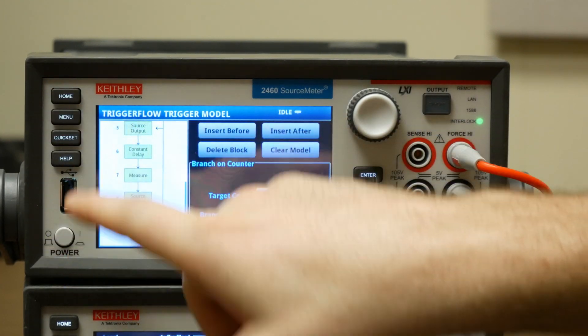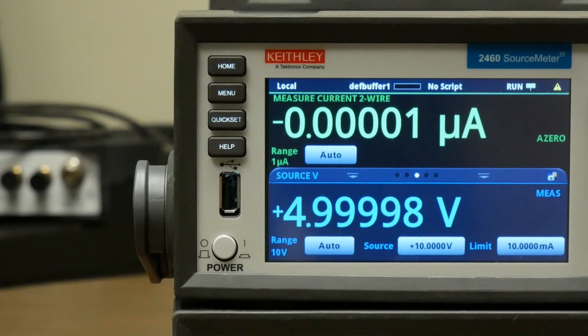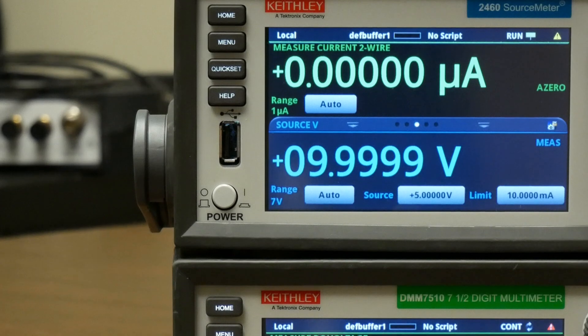Now if we go back to home, and we trigger this again, we can see that now it's going back and forth from 5 volts to 10 volts, and it's going to do this 50 times.